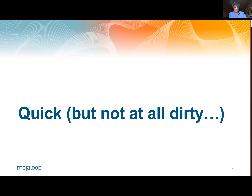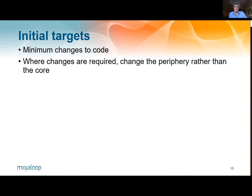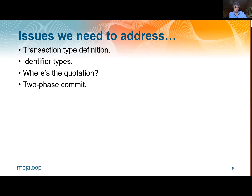So where can we start? Initially, we want to do something with minimum changes to code, and where changes are required, we would rather change the periphery than the core. There are some issues we need to think about: transaction type definition, identifier types, the quotation, and a two-phase commit. I'll talk a little bit about each of these.